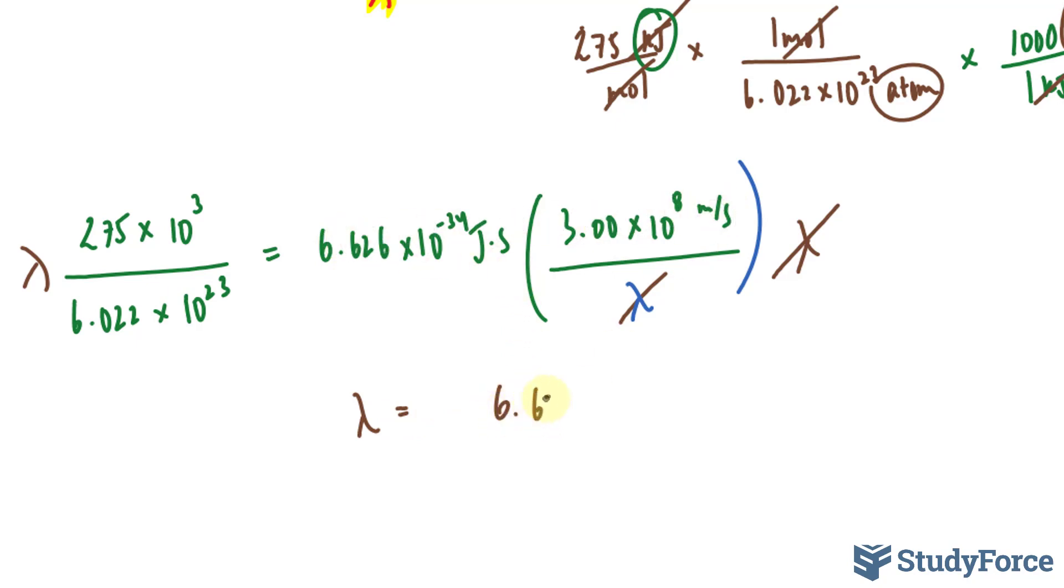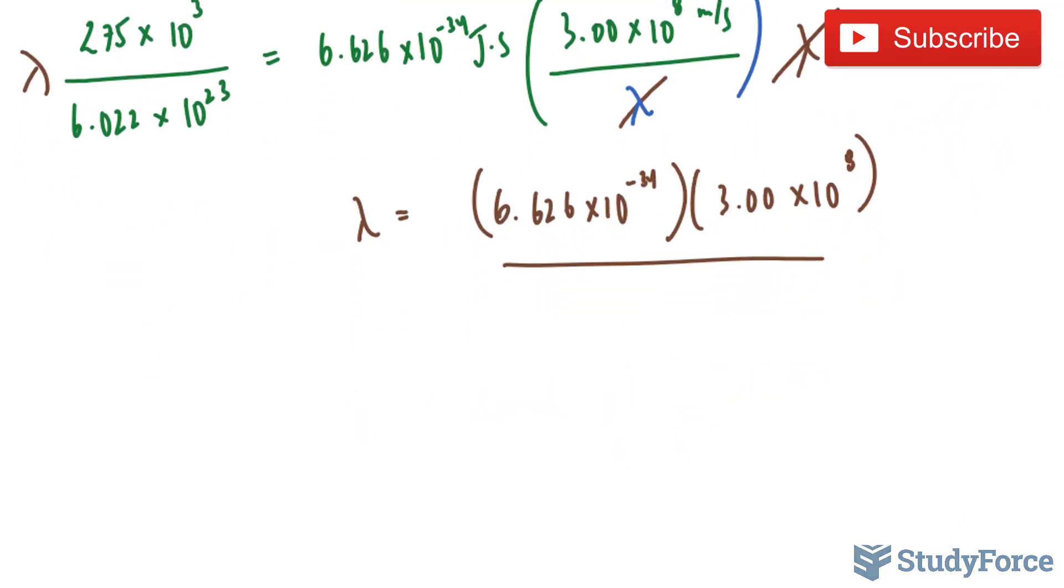6.626 times 10 to the power of negative 34 times 3.00 times 10 to the power of 8, all divided by this quotient: 275 times 10 to the power of 3 over 6.022 times 10 to the power of 23.